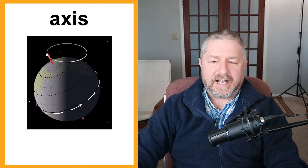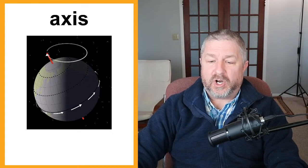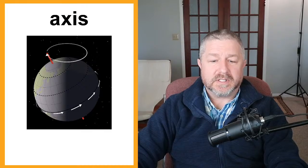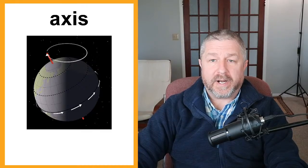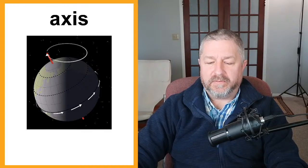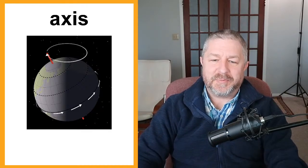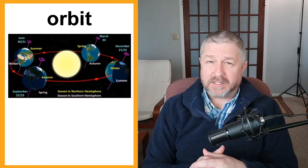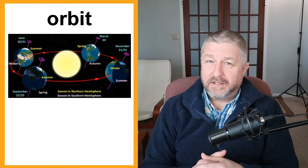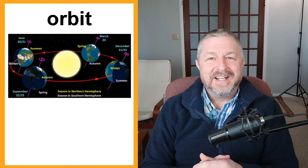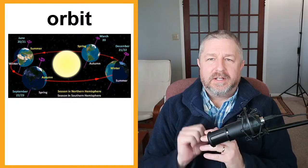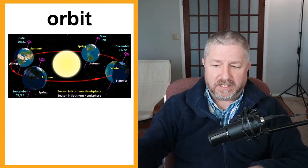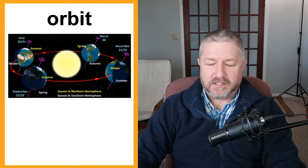Earth has seasons because its axis is tilted. Earth's axis is always pointed in the same direction, so different parts of the Earth get the sun's direct rays throughout the year. In summer, the sun's rays hit that region more directly than any other time of year. And it takes us approximately 365 days to orbit the sun — we call this a year. So the Earth not only spins on its axis but also orbits the sun, and one complete orbit gives us a year.